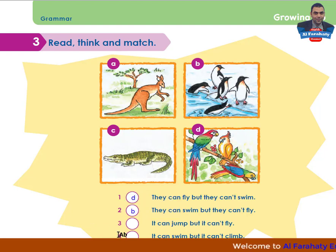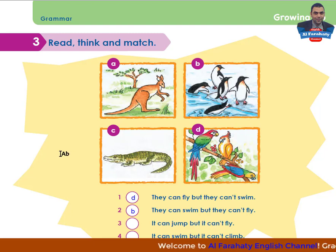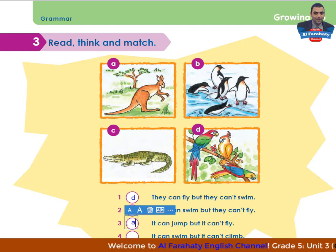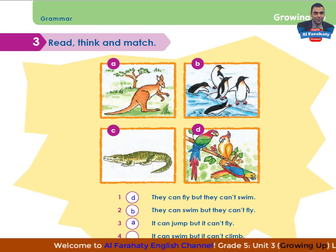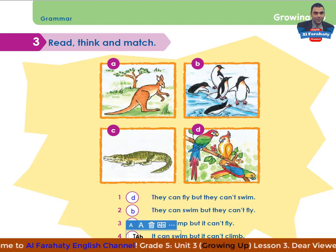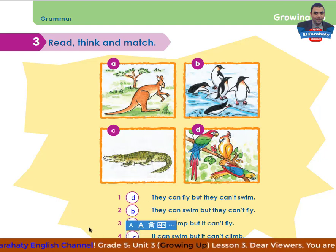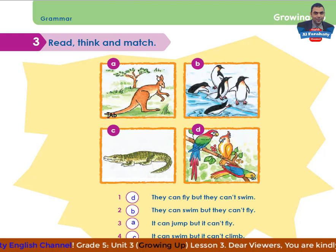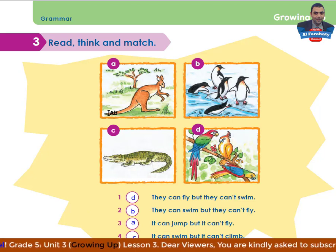Number 3: it can jump but it can't fly - yes, kangaroo. It can swim but it can't climb - yes, the crocodile, picture C. Can you write the names of these animals? Try to write them.